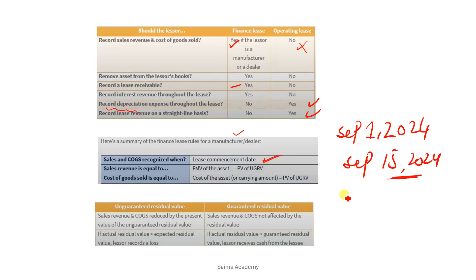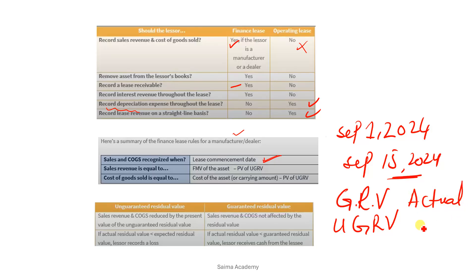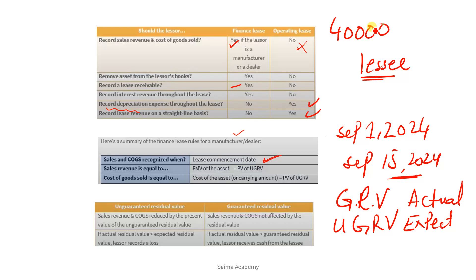The cost of goods sold equals the carrying amount (cost of asset) minus the present value of the unguaranteed residual value. There are different types: guaranteed residual value, unguaranteed residual value, actual residual value, and expected residual value. For example, if the car is leased at $40,000 and the lessee guarantees its value will be $10,000 after 4 years, that is a guaranteed residual value. If it is unguaranteed — say $8,000 — then you calculate its present value.